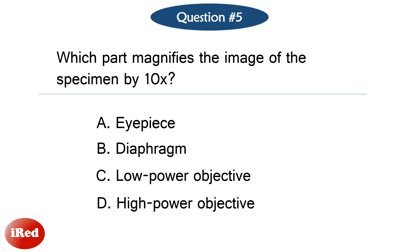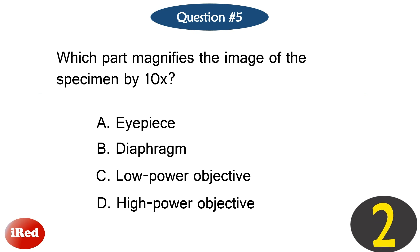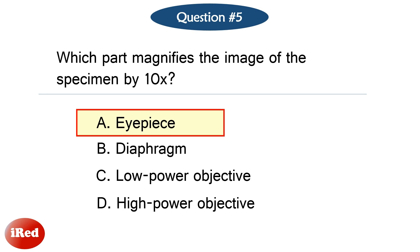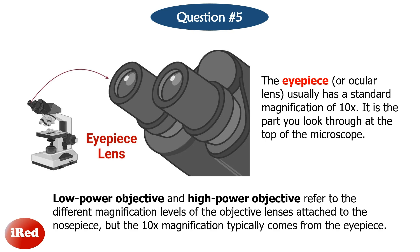Question number 5: Which part magnifies the image of the specimen by 10 times? The correct answer is letter A, eyepiece. The eyepiece, or ocular lens, usually has a standard magnification of 10 times. It is the part you look through at the top of the microscope. Low power objective and high power objective refer to different magnification levels of the objective lenses attached to the nosepiece, but the 10 times magnification typically comes from the eyepiece.